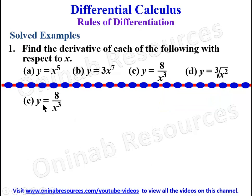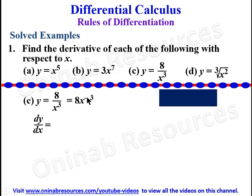For problem 1c, we are going to write this in index form. Since this is 8 over x raised to power 3, we can write it as 8x to the power of negative 3. We apply indices here to easily find dy/dx. Finding dy/dx: this is negative 3 times 8, giving x raised to power negative 3 minus 1, which is negative 24x raised to power negative 4.